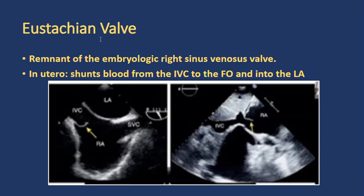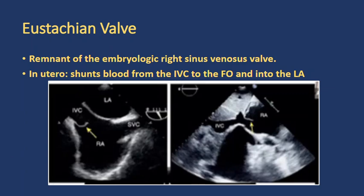The eustachian valve occurs near the IVC, in contrast to the crista terminalis, which is a thick, spoon-like, crescent-shaped muscular ridge that comes from the anteromedial wall of the right atrium and sits next to the SVC. It occurs near the SVC orifice and can sometimes extend to the IVC, occasionally even merging with the eustachian valve into one large structure. Embryologically it comes from the regression of the septum spurium. As the sinus venosus is incorporated into the RA wall, the sinoatrial node lies superior to the crista terminalis, making this structure an especially useful anatomic landmark for EP physicians.